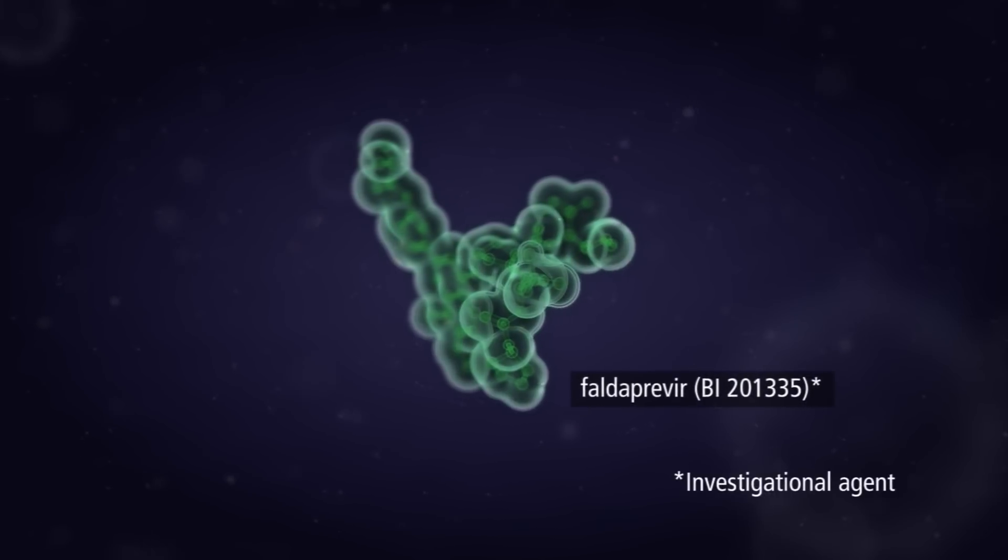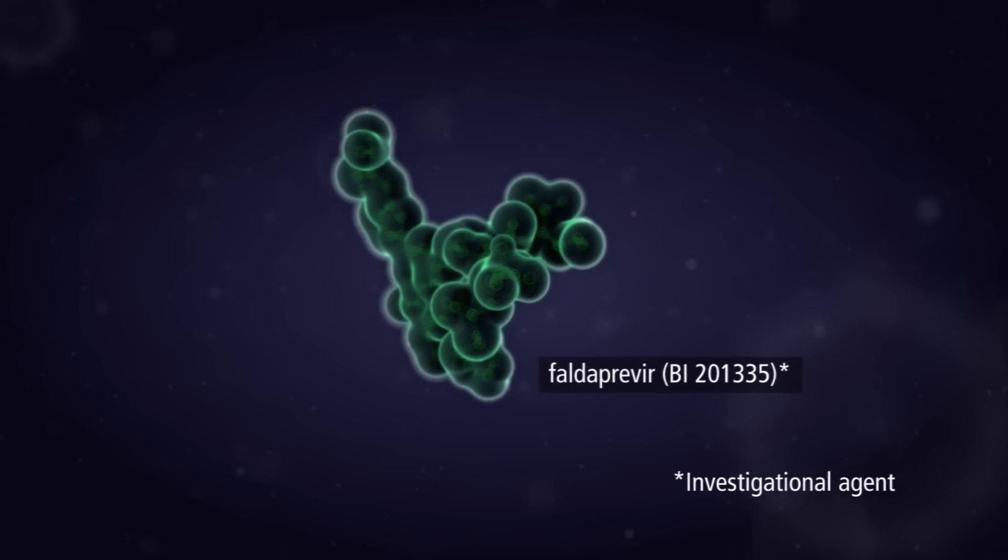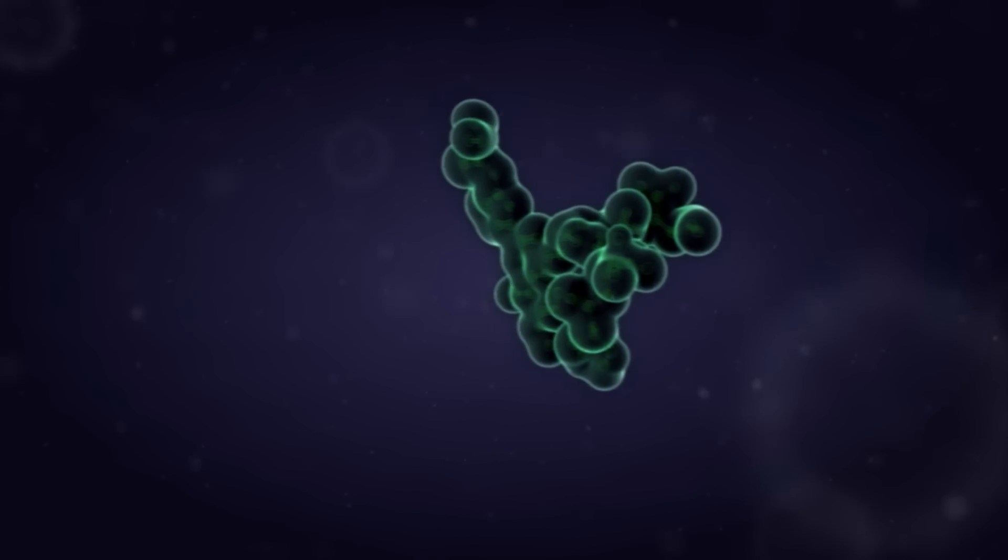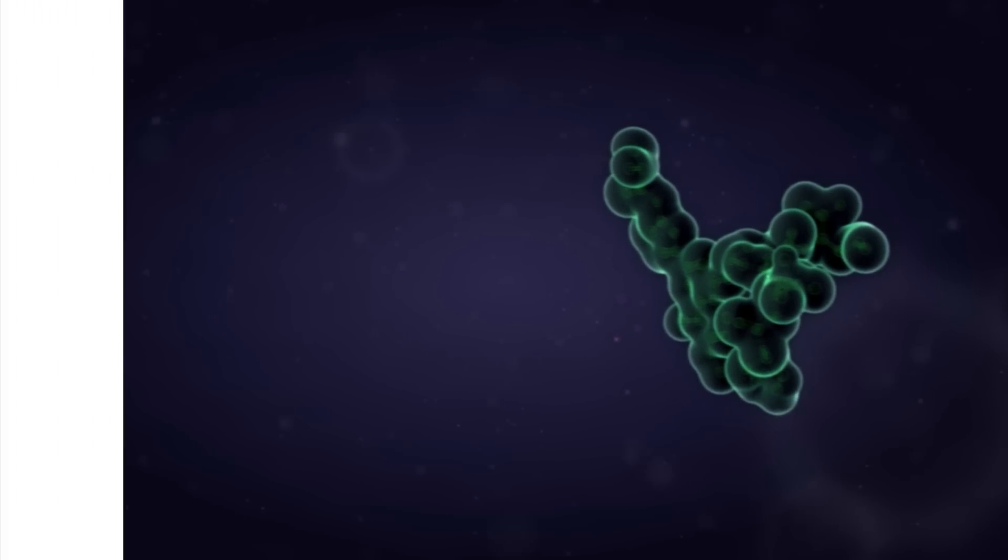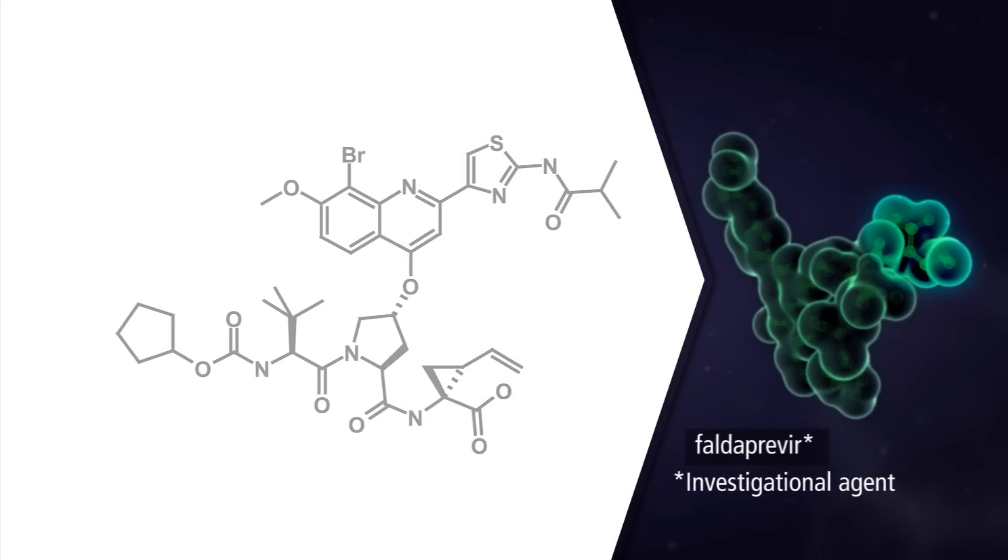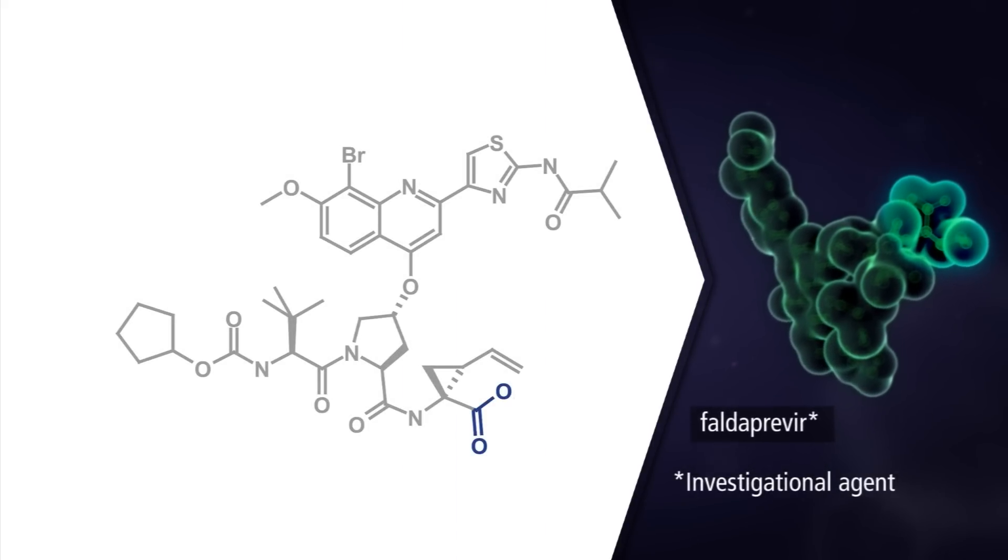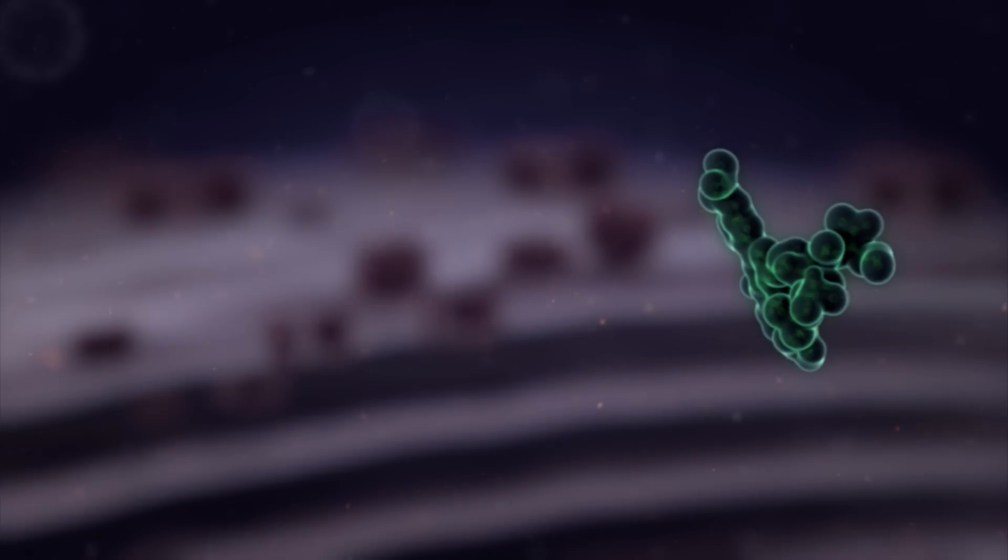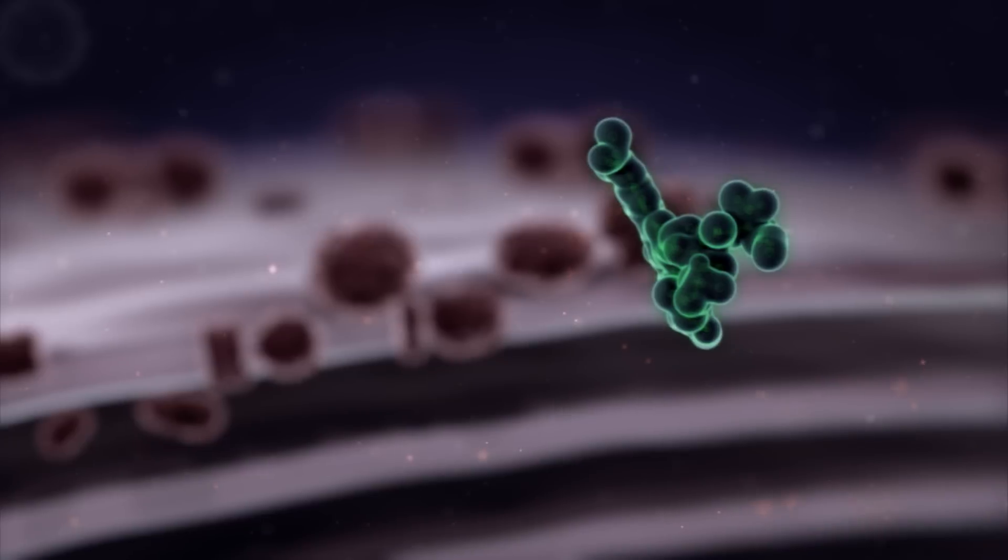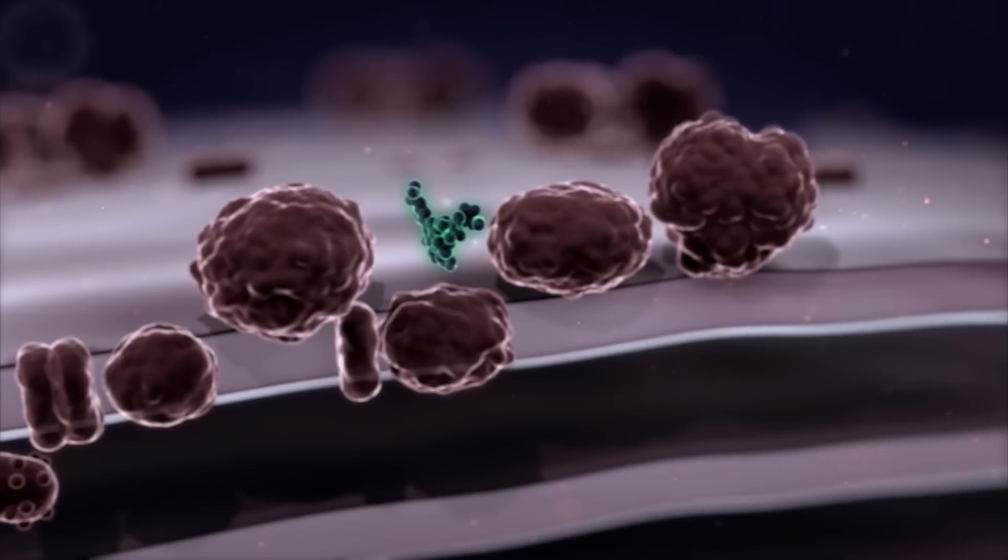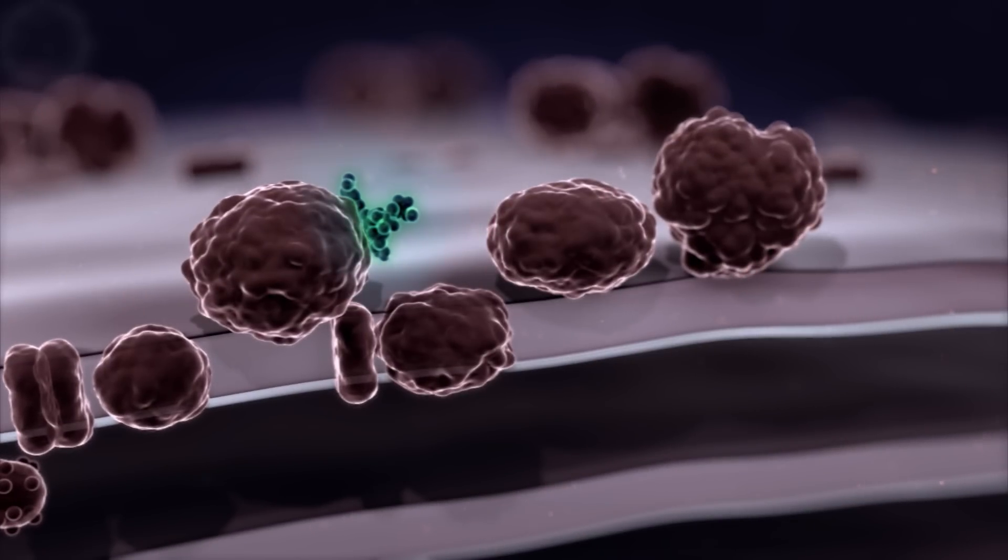Agents being developed for use in the treatment of chronic hepatitis C include compounds that inhibit NS3 protease. Faldaprevir is an investigational NS3 protease inhibitor that has a linear tripeptide structure with a C-terminal carboxylic acid group, which forms a non-covalent complex with the active site of NS3 protease. This prevents the cleavage of the HCV polyprotein and thus the release of the non-structural proteins necessary for the production of viral RNA, resulting in a reduction in viral replication.